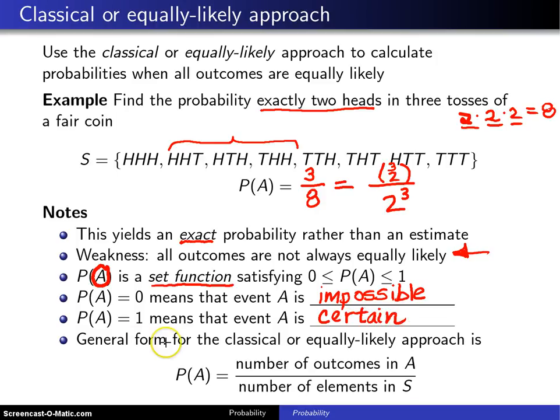The general form for what is known as the classical or equally likely approach which is being developed on this slide is P(A) equals the number of outcomes in A divided by the total number of elements in the sample space. In this case, there are eight of them.